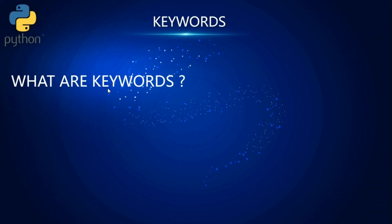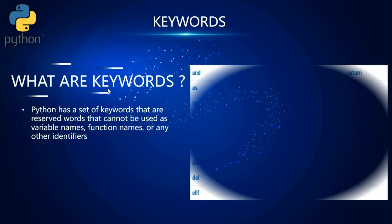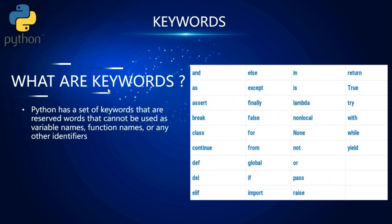The next building block is keywords. Keywords are a set of words declared by Python that have special meanings. They cannot be used as function names, variable names, or for any other purpose. On screen, you can see an image listing the keywords used in Python, and we can use all of them in various programs.